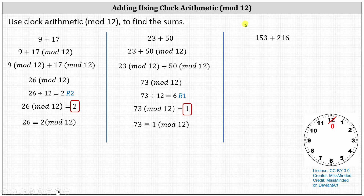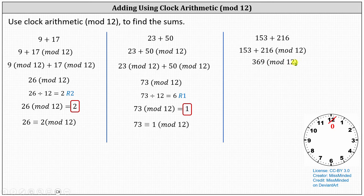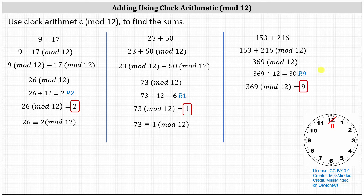Finally, we have 153 plus 216, which we should write as 153 plus 216 mod 12. 153 plus 216 equals 369, giving us 369 mod 12, which equals the remainder when 369 is divided by 12. 369 divided by 12 is equal to 30 with a remainder of 9. Because the remainder is 9, 369 mod 12 equals 9, which also indicates that 369 is congruent to 9 mod 12.